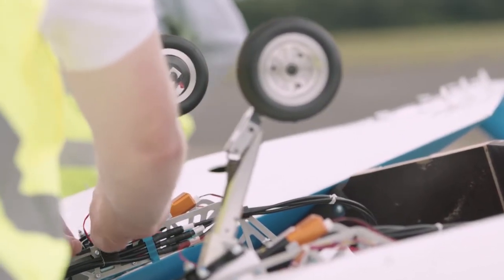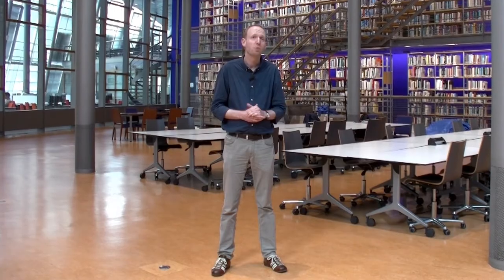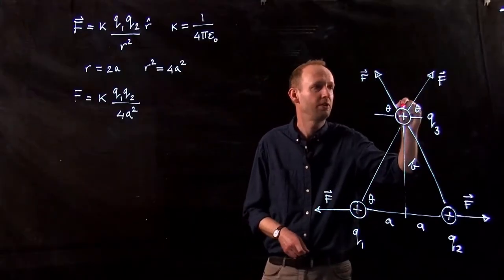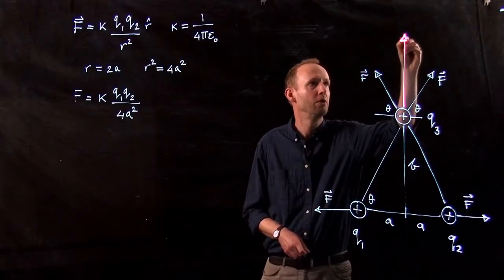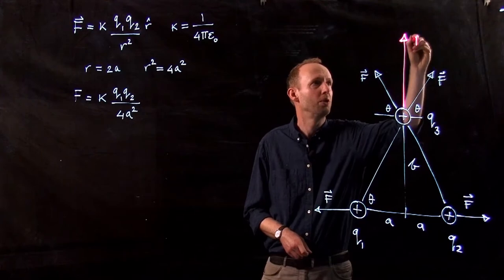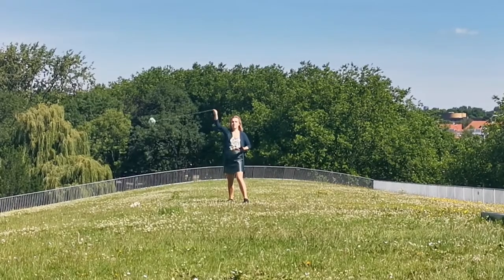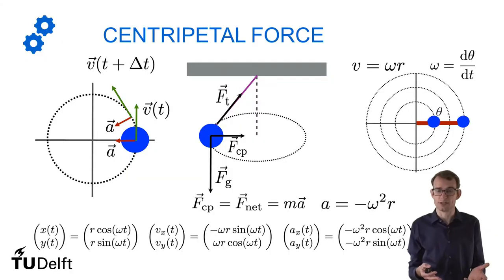Properly understanding physics is crucial for most university programs in engineering. In order to use physics beyond high school level, you will need to approach it in a more abstract and mathematical way. For this reason, the first few weeks in university can be a bit overwhelming. Things that you thought you understood very well are suddenly presented in a much more formal language.